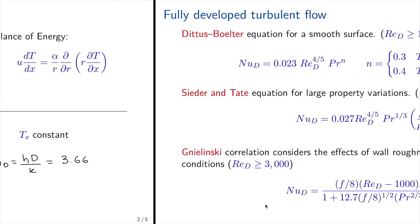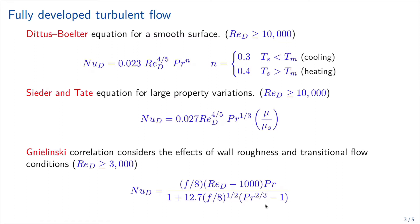Now for the case of turbulent flow, all the correlations are going to be experimental and we have three main correlations, the Dittus-Boelter correlation. The Dittus-Boelter correlation works for Reynolds number higher than 10,000 and is expressed in this way. So it will depend on n and we select n according to the 0.4 if we are in a cooling situation or if we are in a heating situation.